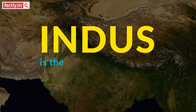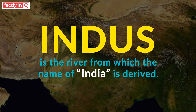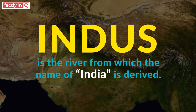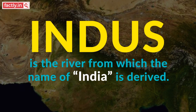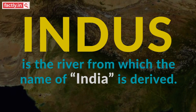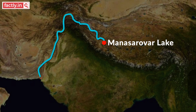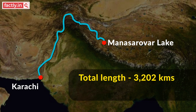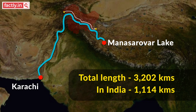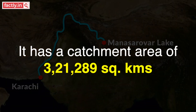There are no prizes for guessing that this is the river from which the name of India is derived, although now a major part of its course is in Pakistan. Indus, also called Sindhu, originates near the vicinity of the famous Mansarovar Lake in the Himalayas — a region that now lies in Tibet. It flows from Tibet through Ladakh and the Hindukush mountains, moving southwards into Pakistan and finally draining into the Arabian Sea near the port city of Karachi. It travels a total length of 3,202 km, with 1,114 km in India, and has a catchment area of 3,21,289 km².